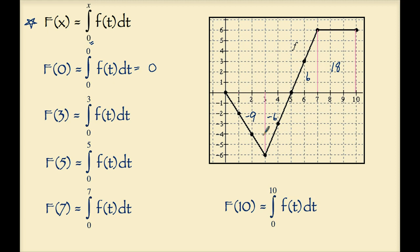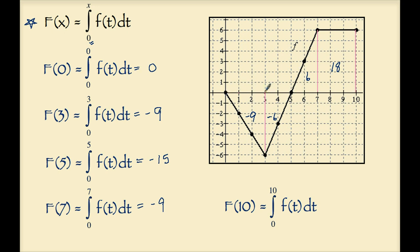From 0 to 3, we need the area of this triangle: negative 9. So F of 3 is negative 9. From 0 to 5, we accumulate negative 9 from 0 to 3 and add negative 6, giving F of 5 equals negative 15. For F of 7, we accumulate negative 9 and negative 6, then add positive 6, giving negative 9. So F of 7 is negative 9. For F of 10, accumulating all area: negative 9 plus negative 6 is negative 15, plus positive 6 is negative 9, plus 18 gives a combined area of 9. Therefore F of 10 is 9.